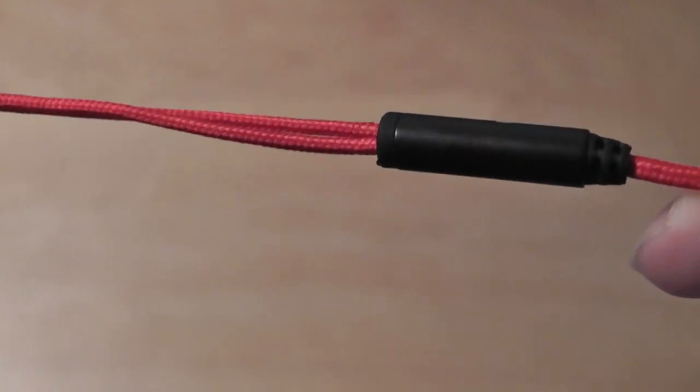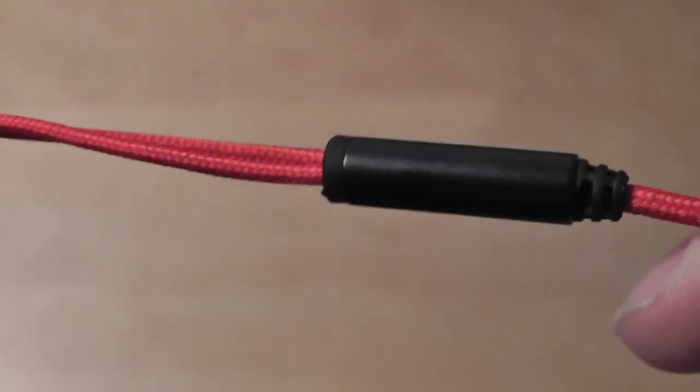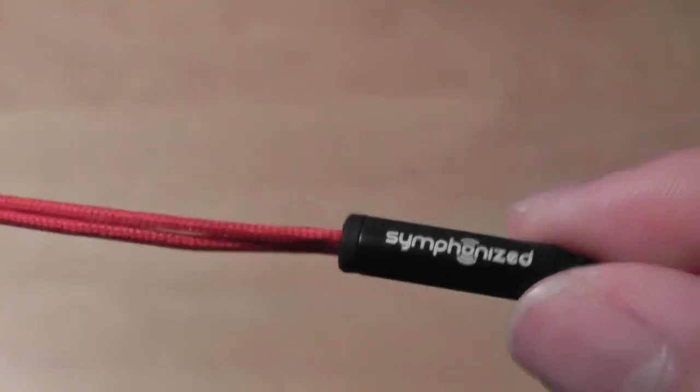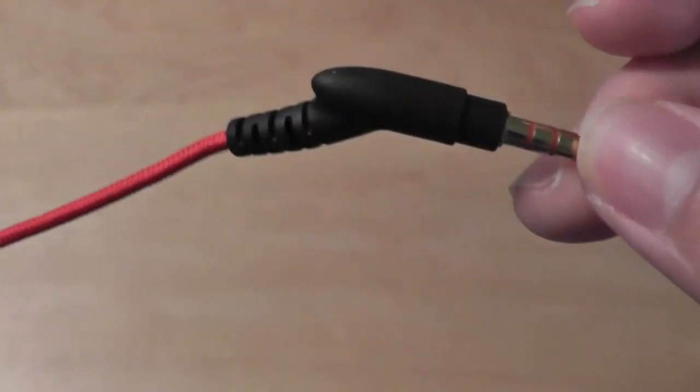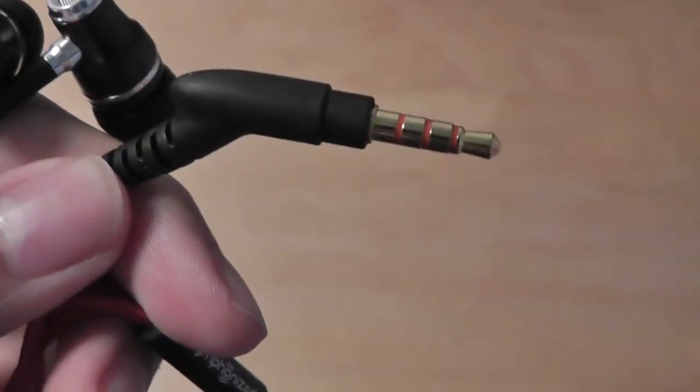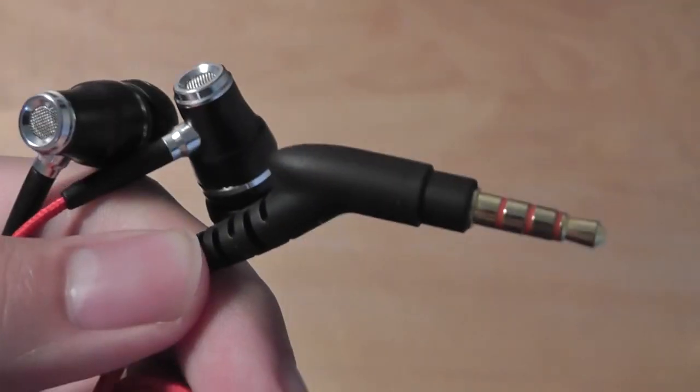The split for the actual wires on the other side is actually crafted out of metal here with a Symphonize logo, so this is something that feels pretty premium. And finally, on the other side, we have access to the 3.5mm jack that has a slightly angular shape to it, and it's gold-plated with a very tight connection. This is something that's pretty easy to use as you plug in and out of your audio devices.